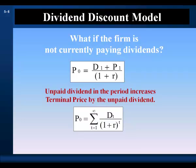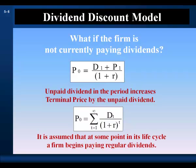Young growing firms may pay no dividends because they are financing their growth with retained earnings. But when firms move beyond their growth phase in their life cycles, they generate more cash flow than needed to finance all positive net present value opportunities. At that point, there will be pressure on the firm to begin paying dividends. So it's assumed that at some point in its life cycle, a firm begins paying regular dividends. Therefore, the dividend discount model is conceptually applicable to firms not currently paying dividends.